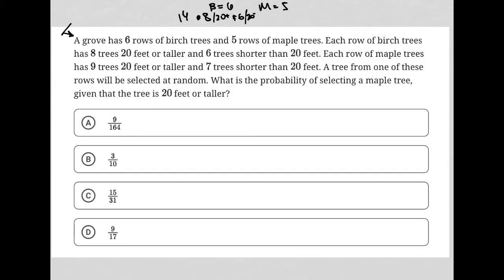The next sentence says each row of maple trees has nine trees 20 feet or taller and seven trees shorter than 20 feet. So each row for maple has a total of 16 trees.